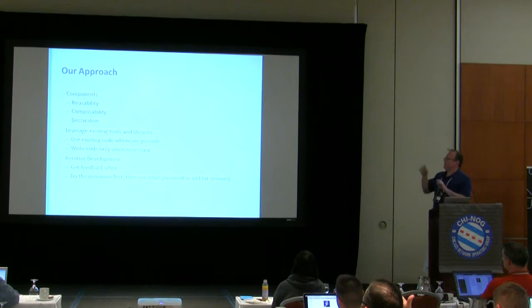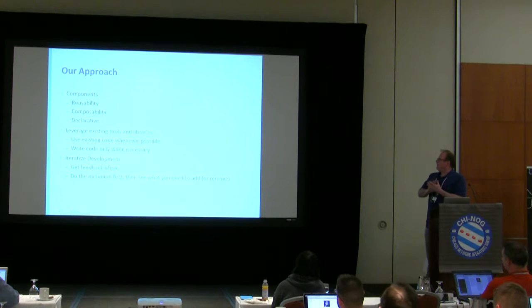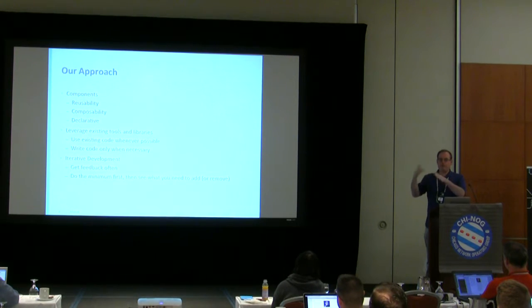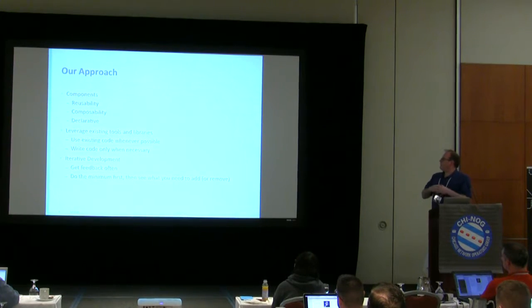I'm going to take a quick detour into our approach. I have a very similar mindset to the previous speaker, in terms of trying to build pieces that do one thing well rather than trying to do everything all in one place. We have an idea of components, and there are three big things we think about when building software: reusability — meaning we can do it somewhere else; composability — meaning the components have interfaces so they can play together; and being declarative.